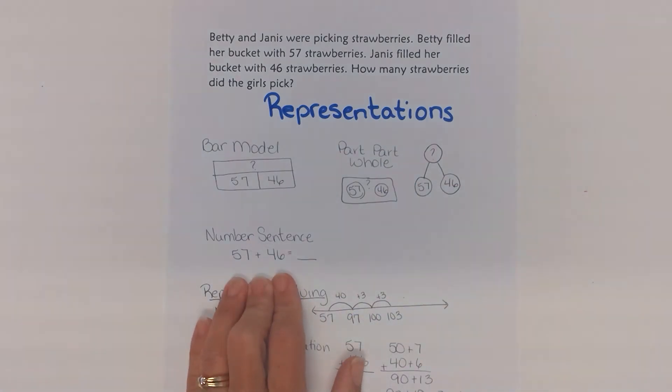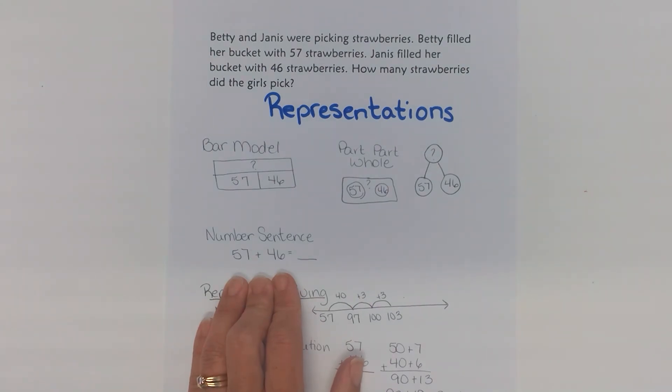The number sentence is also a way to represent and it should match the story problem that's given even if it has a missing part or I have an unknown in the middle of the addition problem. I want to write that number sentence with that unknown in the middle and not switching it to a subtraction problem just yet.